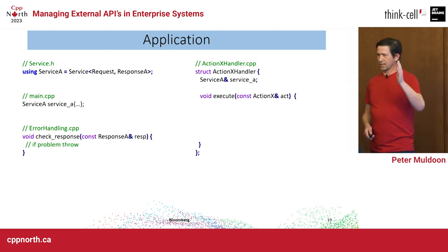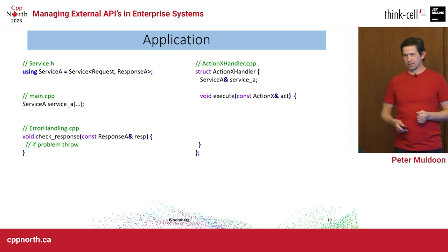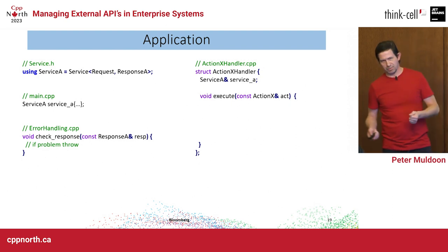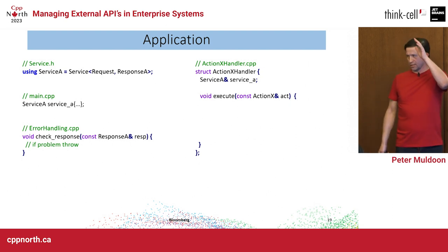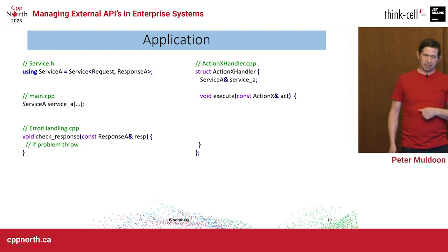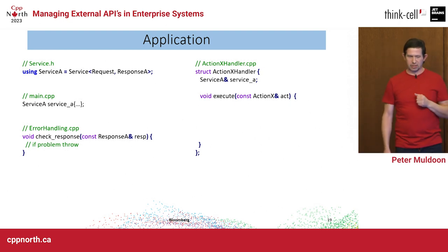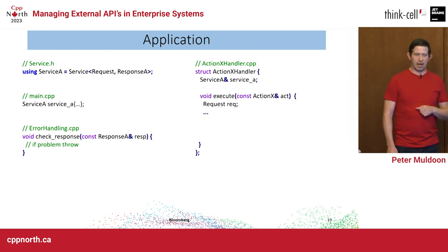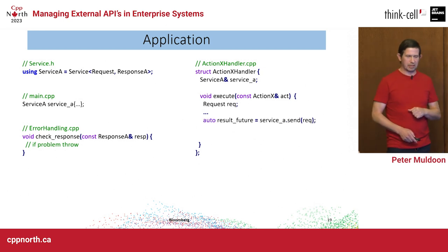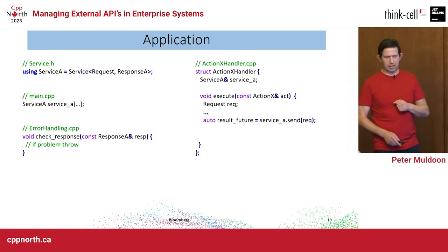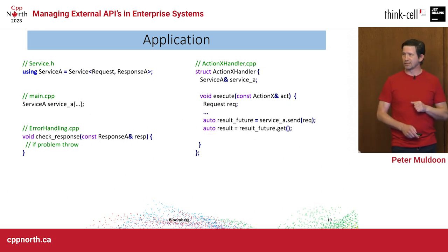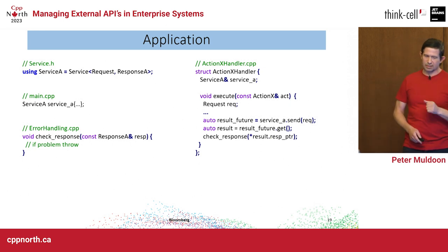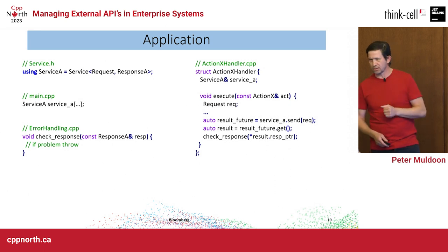On the left I have single files, but on the right I have hundreds of action handlers: create this type of trade, modify, cancel, split — hundreds of these files, with new ones being added every week. Each handler holds a service A reference, populates a request with the required data, calls the service we designed, gets the future, resolves it with get(), dereferences the response via the unique pointer in the result, and checks it.